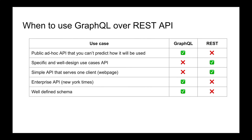The problem with using REST for ad-hoc APIs is that the client may suffer because it might need to do multiple round trips to satisfy a certain requirement. Your backend might be solid, but the client is slow. With GraphQL, your client is fast since everything comes in one request — but now you build contention on your server, so you better know what you're doing on the backend for those queries.